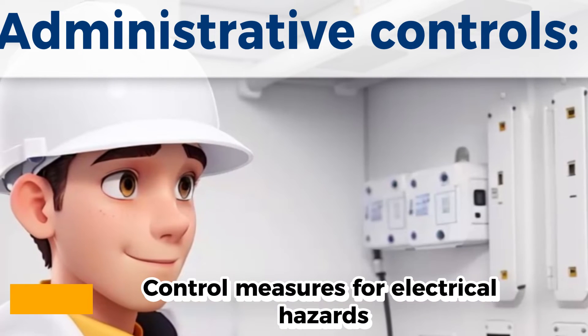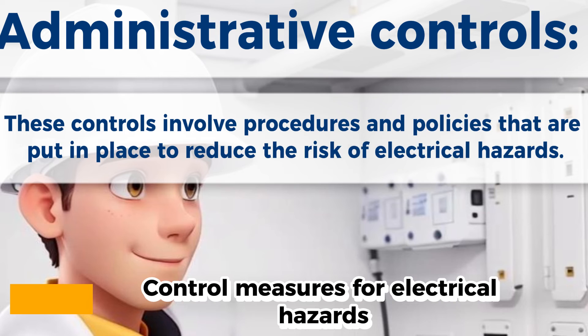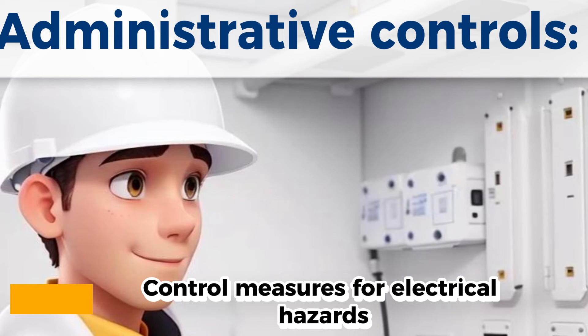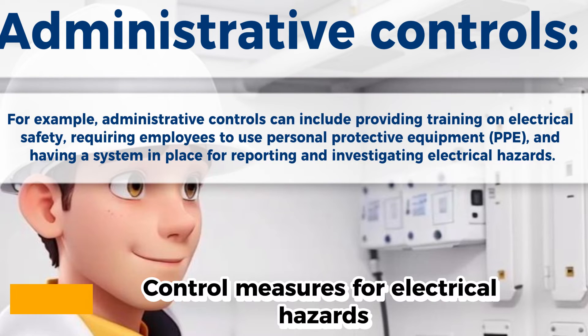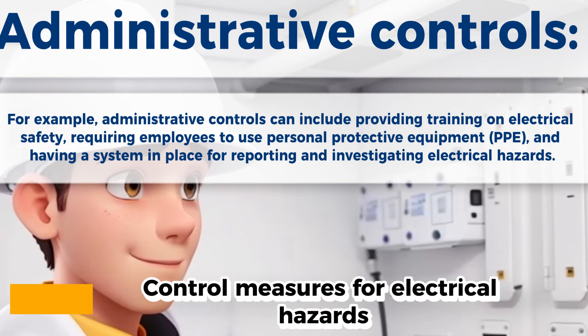Administrative controls. These controls involve procedures and policies that are put in place to reduce the risk of electrical hazards. For example, administrative controls can include providing training on electrical safety, requiring employees to use personal protective equipment (PPE), and having a system in place for reporting and investigating electrical hazards.